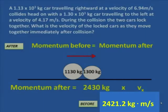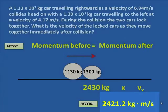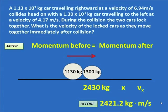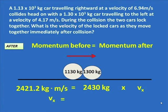The before equals the after. The after equals the before. Now they want us to find the velocity, so we take the momentum we got before, set it equal to the momentum afterwards, and from that we can find the velocity. Dividing the two numbers, we get 0.996 meters per second, to the right.